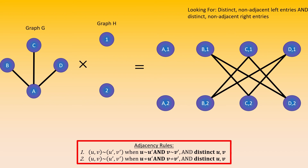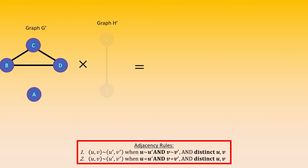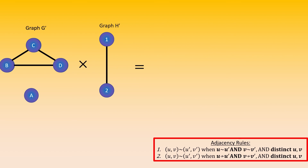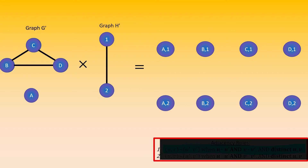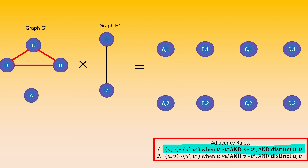As our final example, let's take the modular product of the complements of the previous two graphs, and let's call these complements G' and H'. Again, first find the vertex set. Next, look at the first adjacency rule. Which pairs of vertices have distinct left and distinct right entries that are both adjacent in their respective graphs? In this case, since vertex A is not adjacent to any other vertex in graph G, no vertex with left entry A will have any edges resulting from the first adjacency rule. On the other hand, B, C, and D are mutually adjacent in graph G, and 1 and 2 are adjacent in graph H, so we will have plenty of edges to draw in according to our first adjacency rule. Here they are.